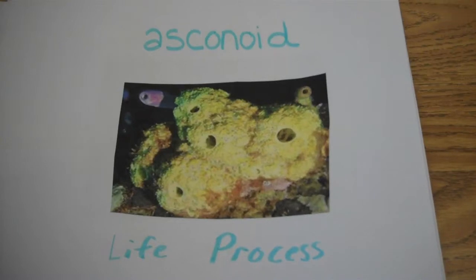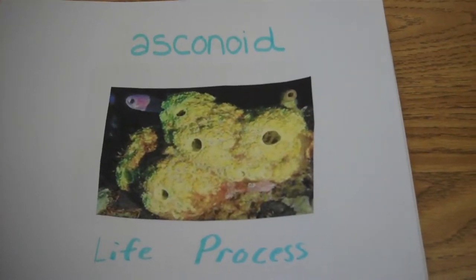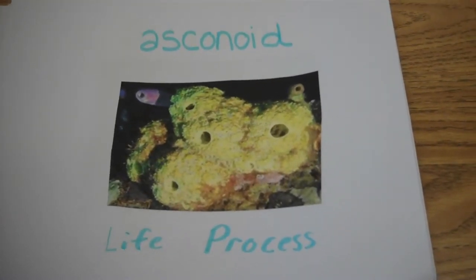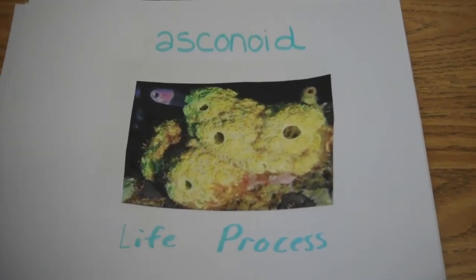One life process of an asconoid sponge is how it breathes. It breathes through its pores. The pores filter the water throughout the sponge's body. This is a part of the respiratory system.